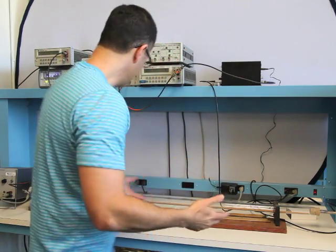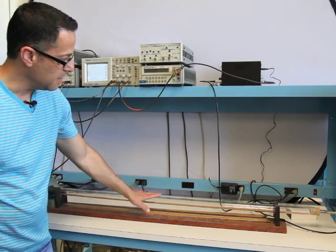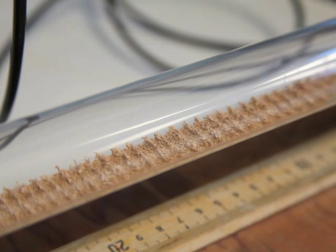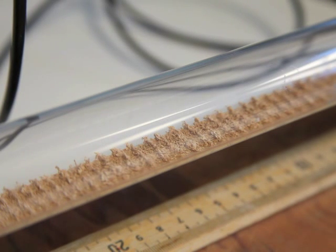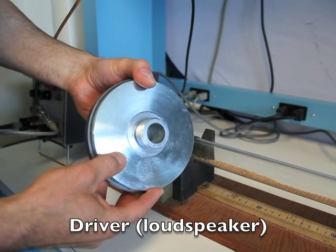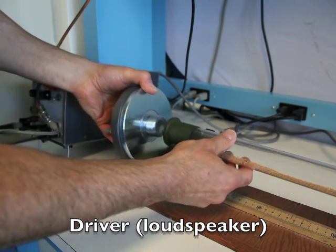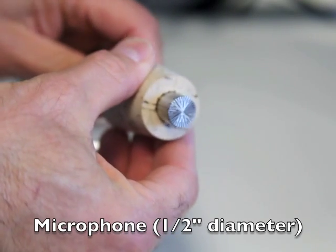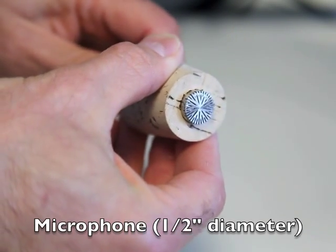So here's our experiment. We have a resonant tube here. Here's a close-up of the cork dust in the resonant tube. Here's the loudspeaker that will create the sound waves in the resonant tube. Here's the microphone that we'll use to pick up the sound waves in the resonant tube.